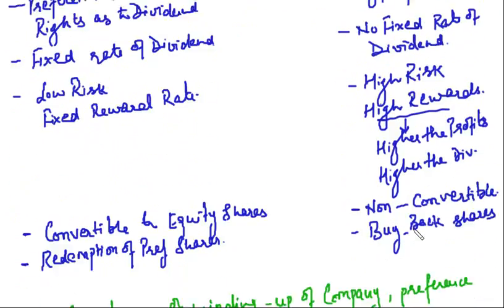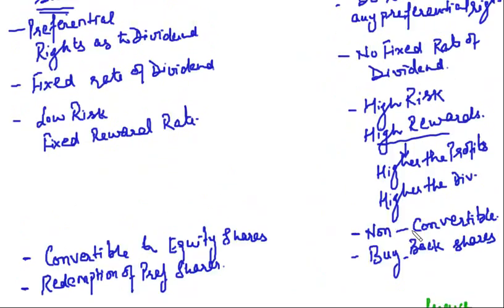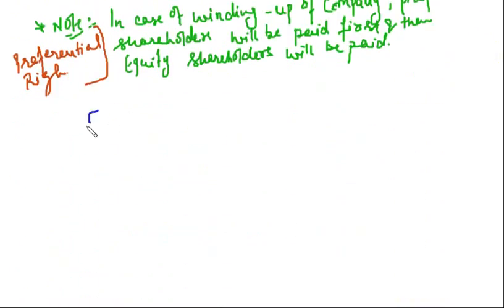Types of shares are important from a theory point of view. When we prepare the balance sheet and notes to accounts, we write equity shares separately and preference shares separately. So knowing what equity shares and preference shares are will help you. This is just an overview of how we are going to deal with these two things in the chapter. For now it is important to understand the meaning of preference shares and equity shares and how they are dealt with.